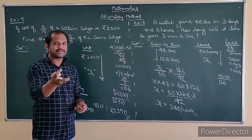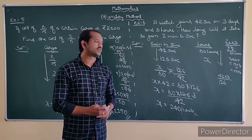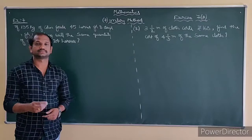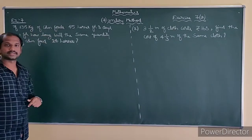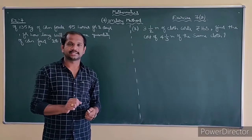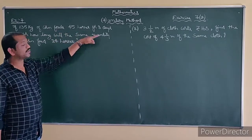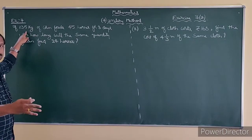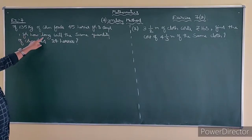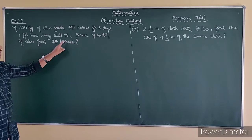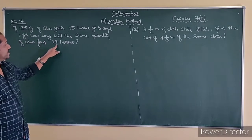I hope you have understood these two problems. I will be doing even more exercises to make you understand. Now we have the next problem — if 135 kg of corn feeds 45 horses for 8 days, for how long will the same quantity of corn feed 24 horses? So 45 horses eat in 8 days. How many days can 24 horses eat the same 135 kg?